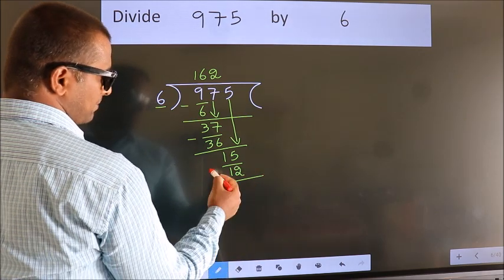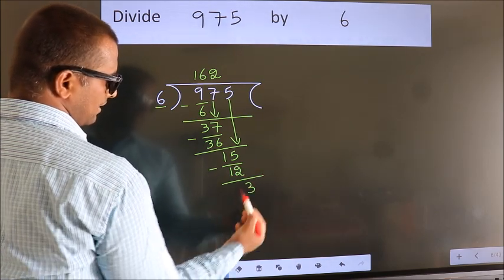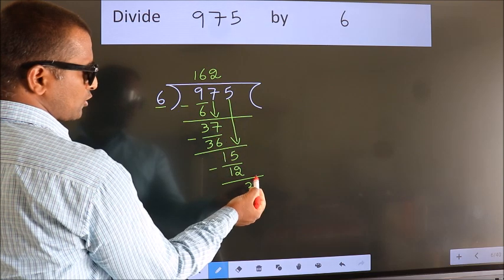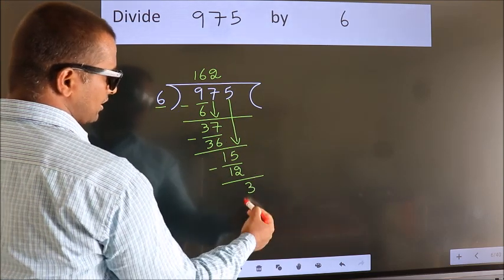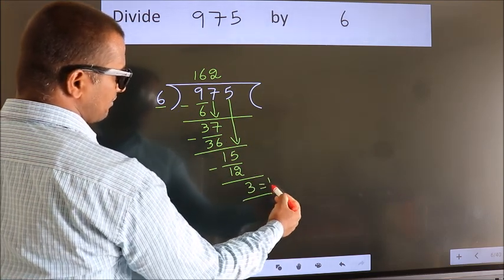Now we subtract. We get 3. No more numbers to bring it down. So we stop here. This is our remainder. This is our quotient.